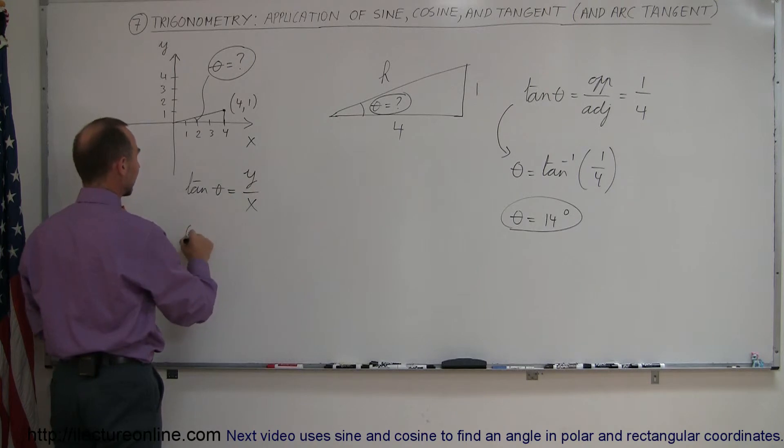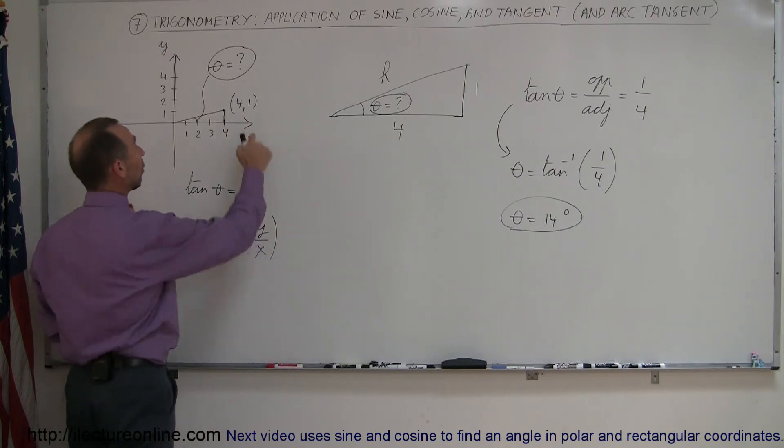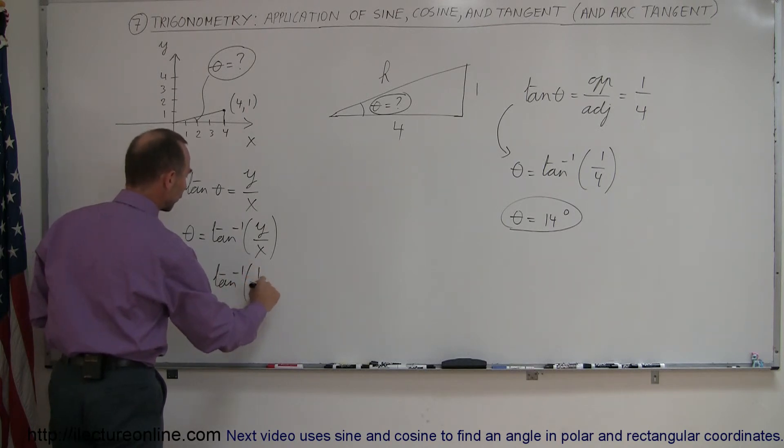And so we can then say that theta is equal to the arctangent of y over x. And in our particular example, y is 1, x is 4. So we say theta is equal to the arctangent of 1 over 4.